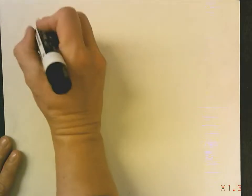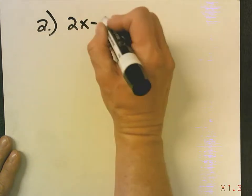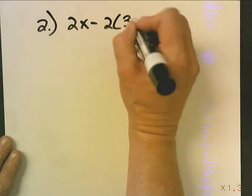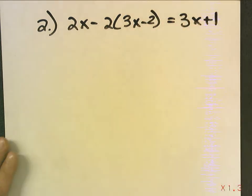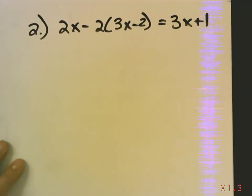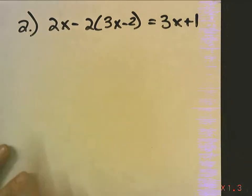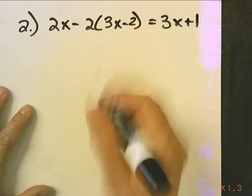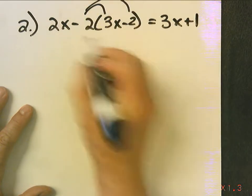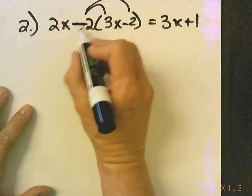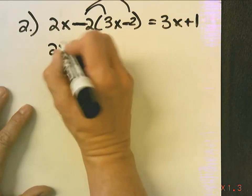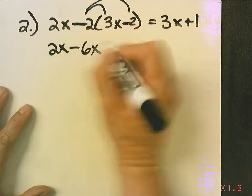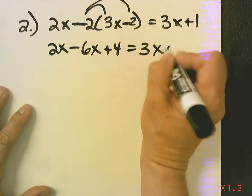Okay, now we're going to do number 2. Now for number 2, the first thing I have to do is simplify the left-hand side. It's not simplified because I see parentheses. So I'm going to have to distribute my negative 2. Now notice, when I distribute my negative 2 to the negative 2, I'm going to get a positive number. So this becomes negative 6x plus 4 equals 3x plus 1.